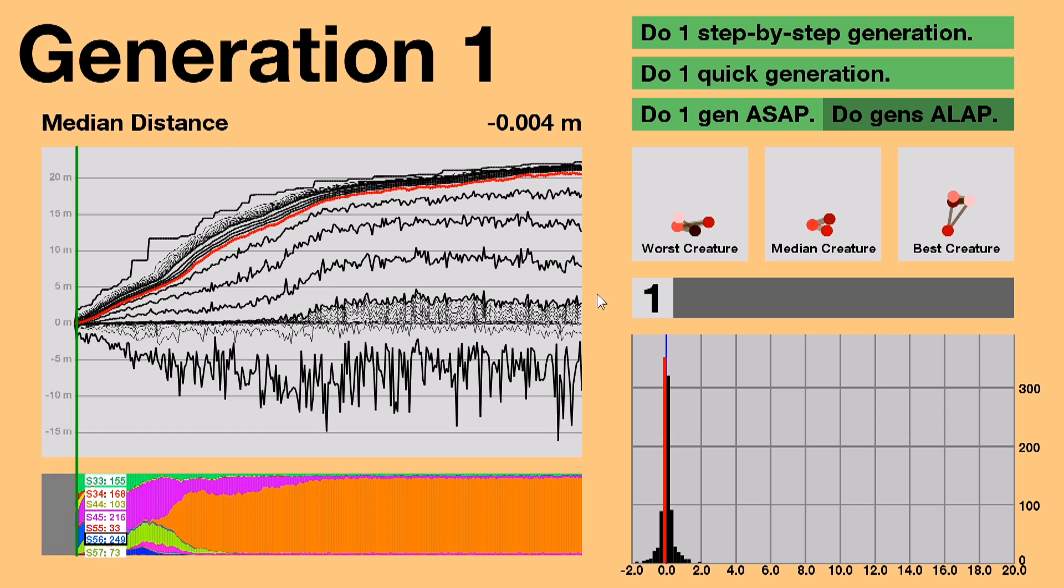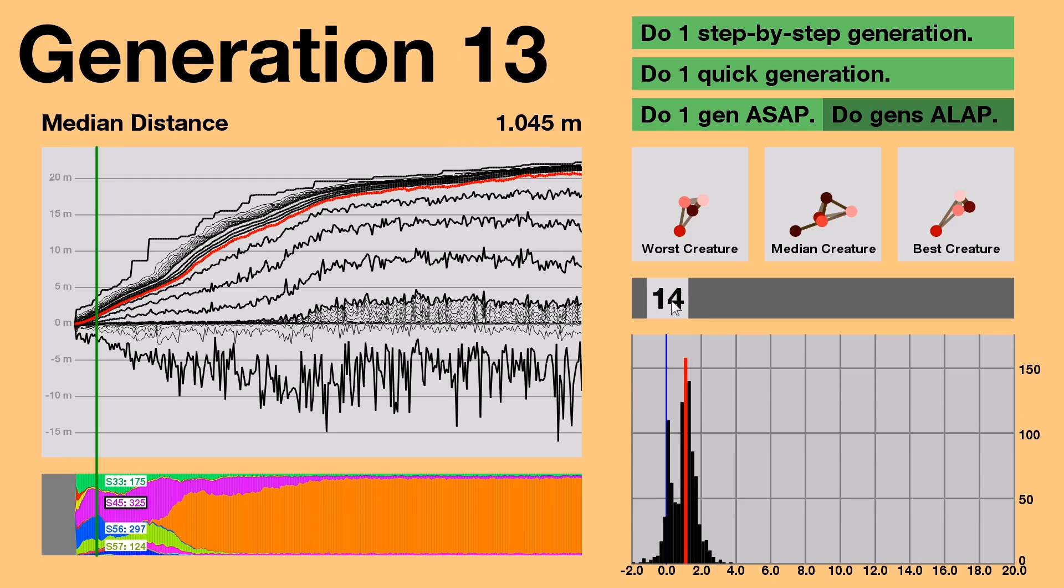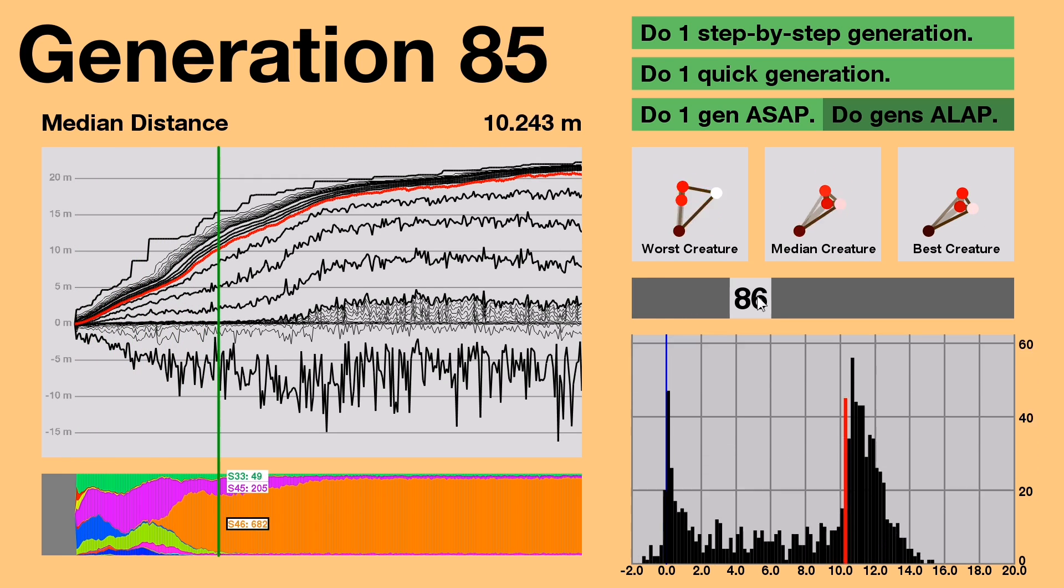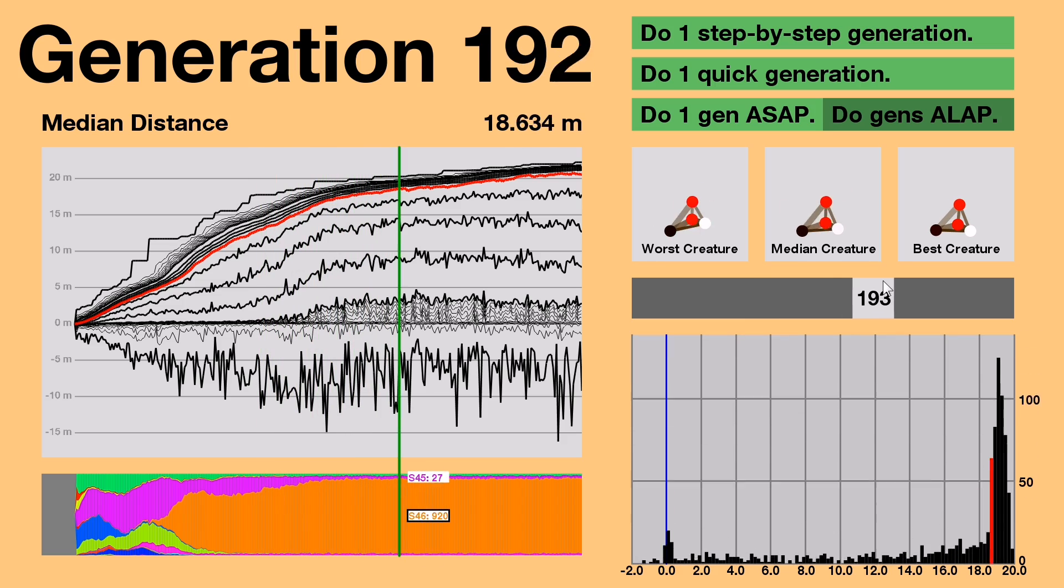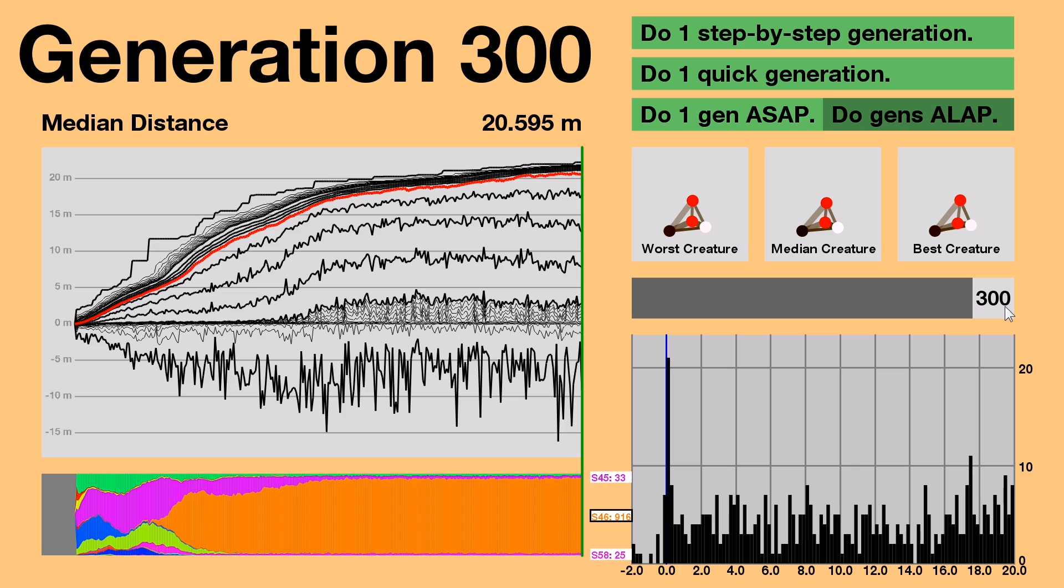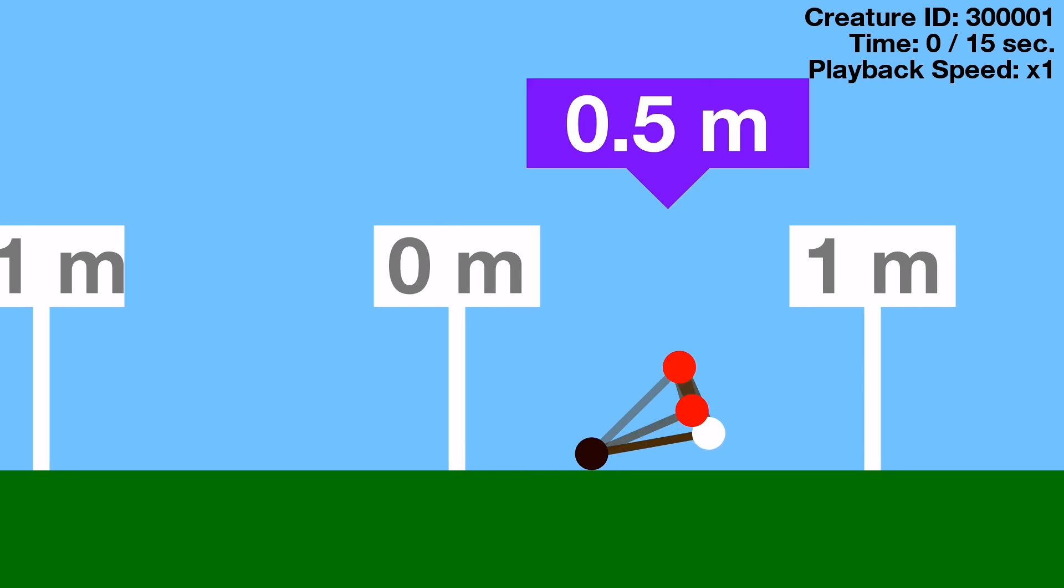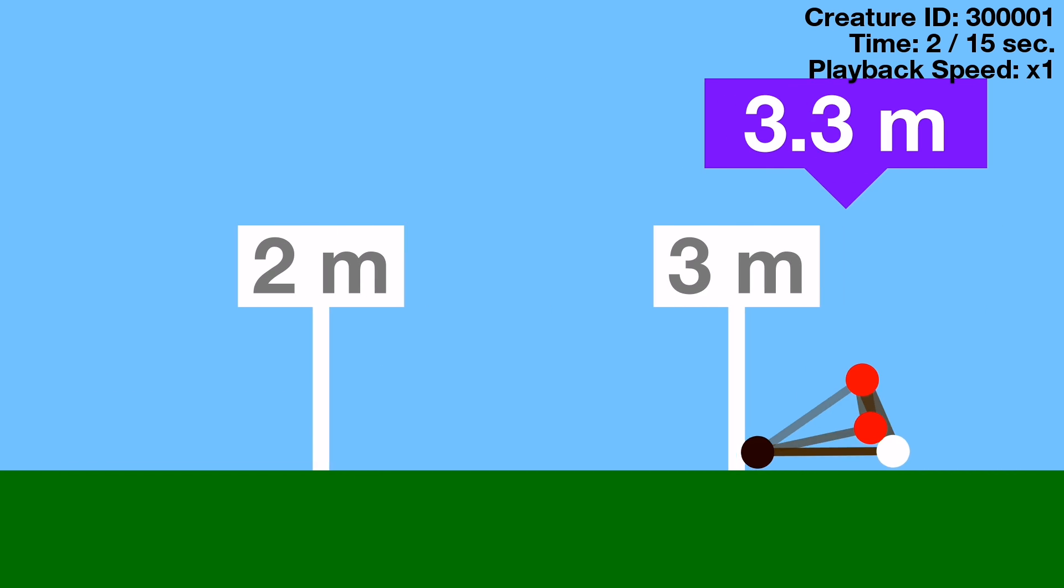One more time, here's the last 300 generations of history in 7 seconds. Finally, let's do one more step-by-step generation just to see what the whole population looks like.